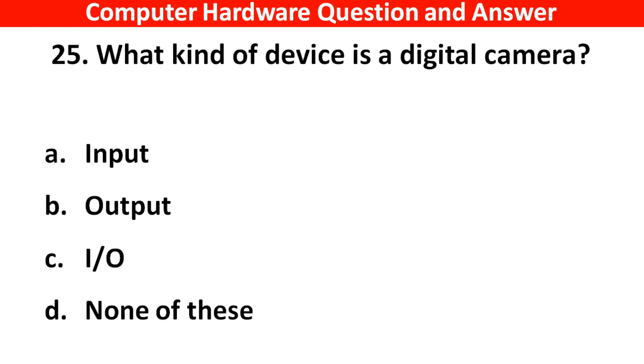What kind of device is a digital camera? The right answer is Option A: Input device. Thank you.